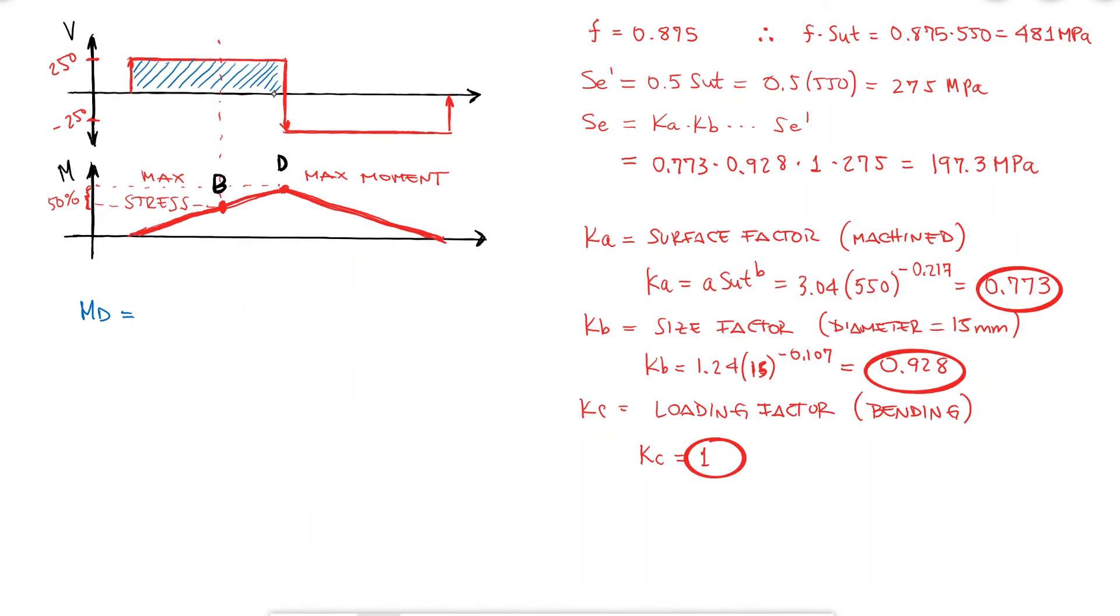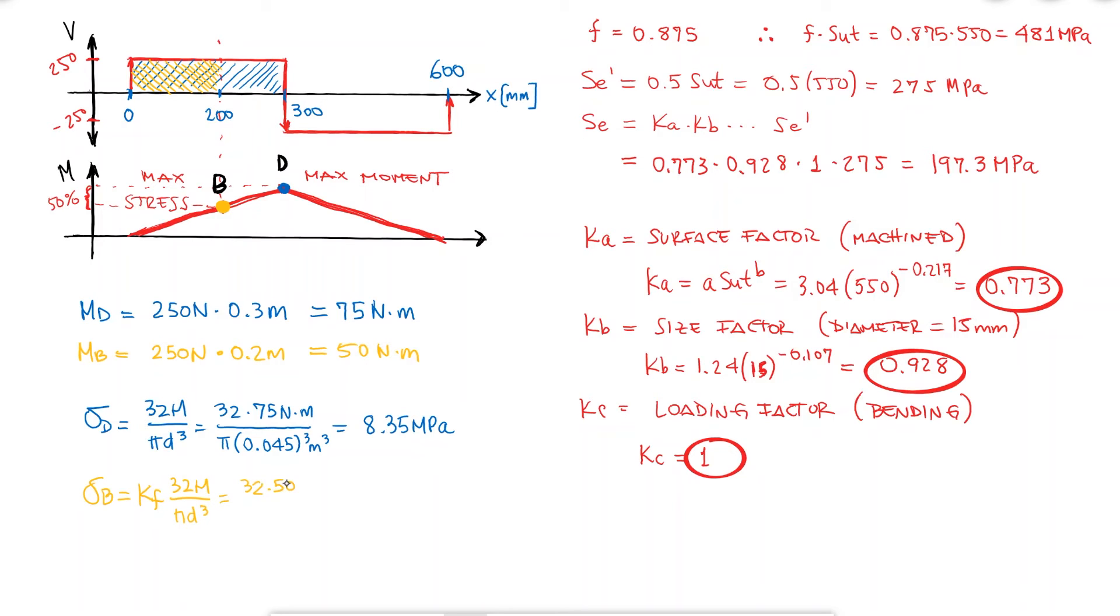I know that the moment at D is 75 Nm, and that the moment at B is 50 Nm. The stress at D, where the maximum moment occurs, will be equal to 8.35 MPa, using a diameter of 45 mm. The moment at B, without using the stress concentration factor yet, would already be way higher than that at 151 MPa. So I know that the higher stress will occur at point B, where the notch is located.